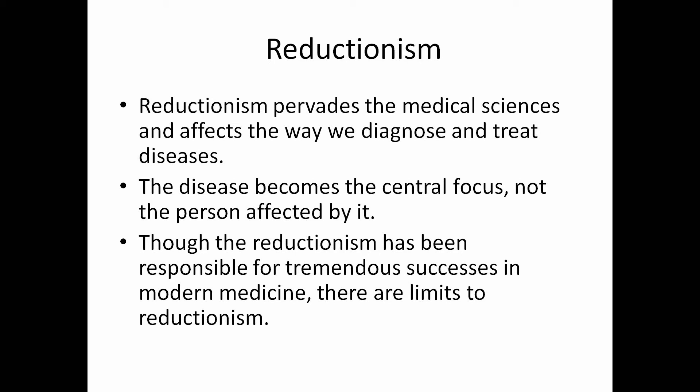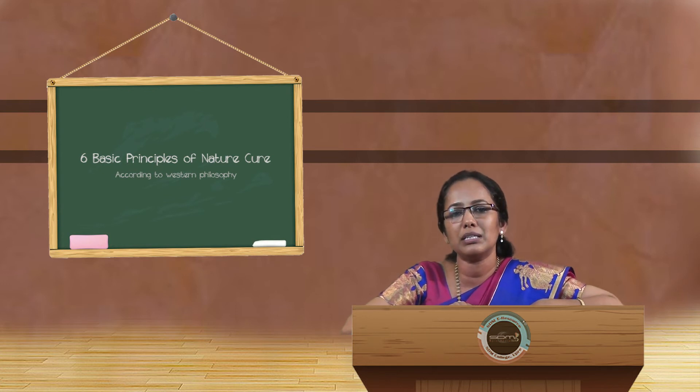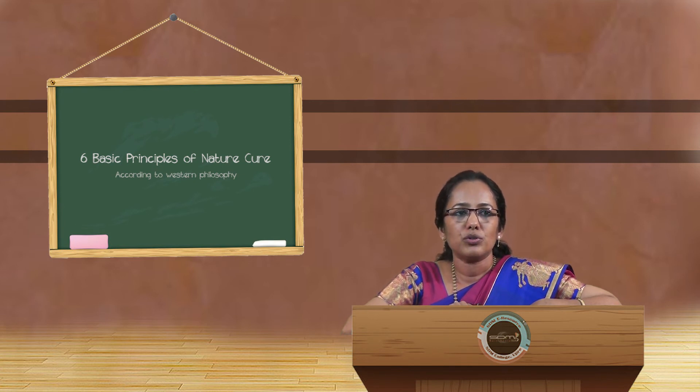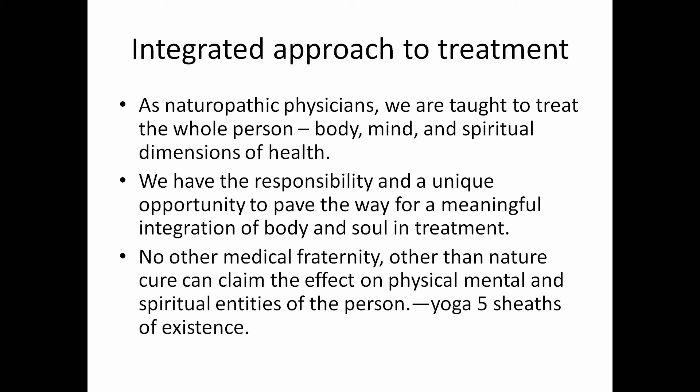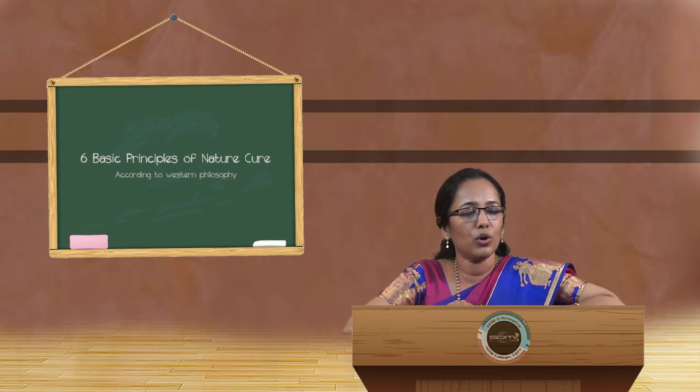Reductionism neglects the complex interplay between the systems of the body, whereas nature cure treats the person and not the disease. Though reductionism has been responsible for tremendous success in modern medicine, there are limits to it. As naturopathic physicians, we are taught to treat the whole person — body, mind, and spirit. No other medical fraternity can claim the same effect on the physical, mental, and spiritual entities of a person. In yoga, the five sheaths of human existence are considered, and nature cure has interventions at each level of human existence.